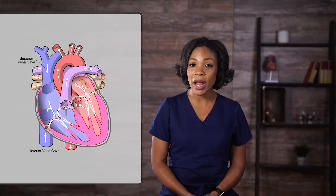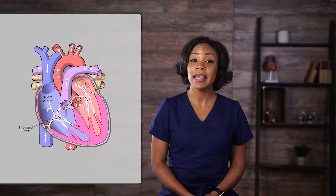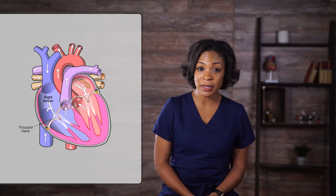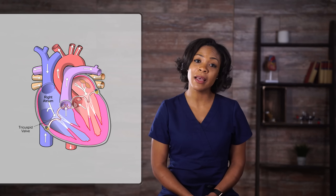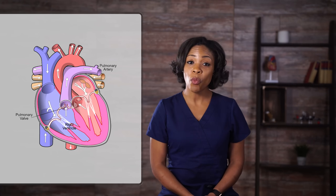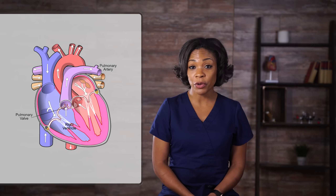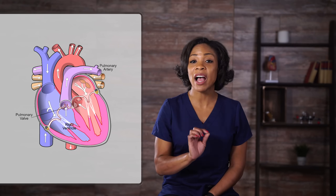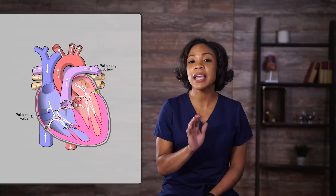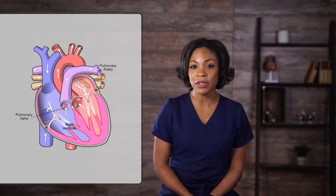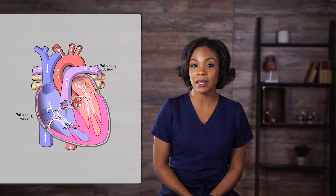Deoxygenated blood fills the right atrium, then the tricuspid valve opens, sending the blood into the right ventricle. Once the right ventricle fills, the pulmonary valve opens and blood enters the pulmonary artery, traveling to the lungs where it is oxygenated.